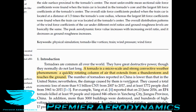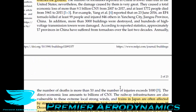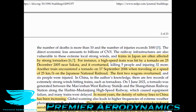A tornado is a micro-scale and strong convective weather phenomenon — a quickly rotating column of air that extends from a thunderstorm and touches the ground. Trains in Japan are often affected by strong tornadoes. For instance, a high-speed train was hit by a tornado on the 25th of December near Sakata and it overturned. Another train encountered a tornado on the 17th of September 2006 when traveling at only 25 kilometers per hour, and the first two wagons overturned. So even if the train isn't going very fast, a tornado can cause a huge amount of damage.